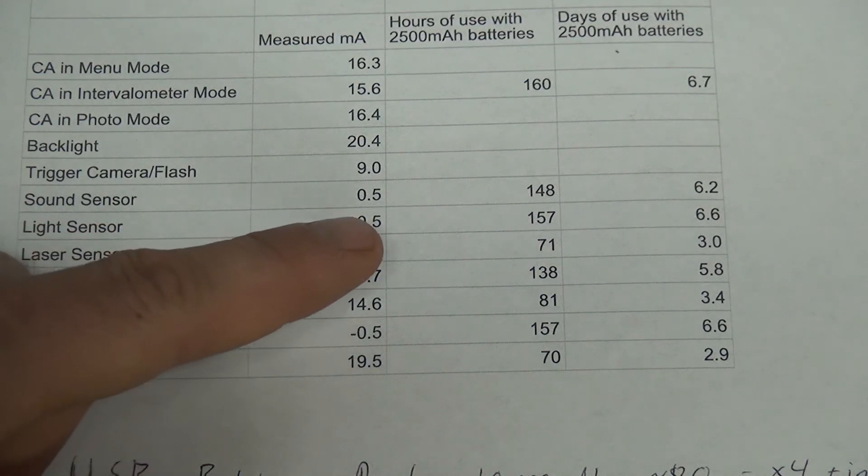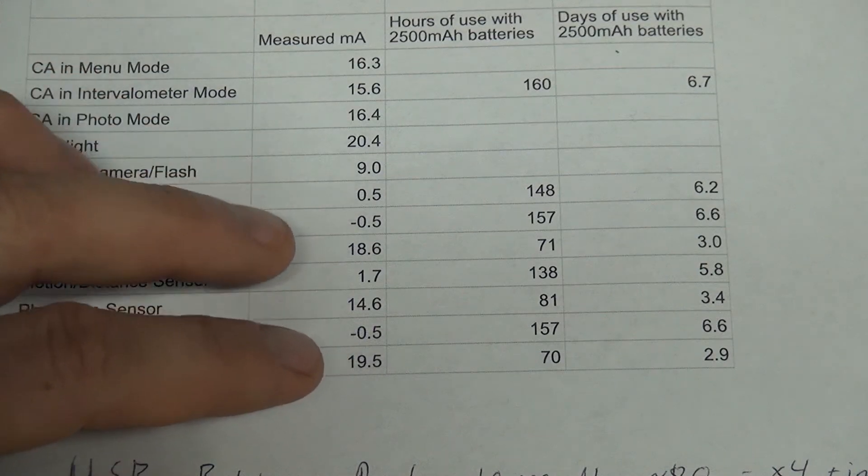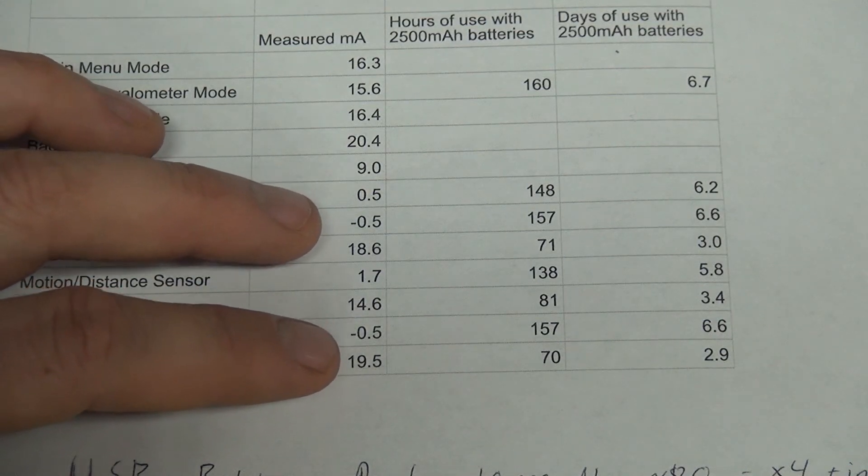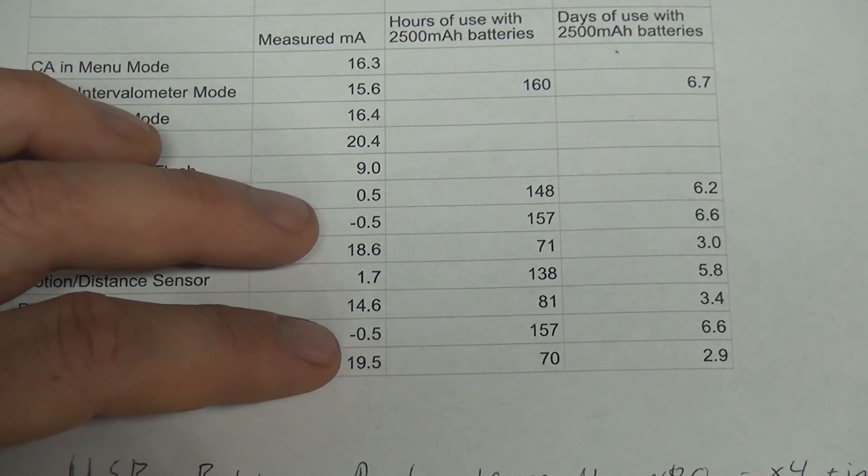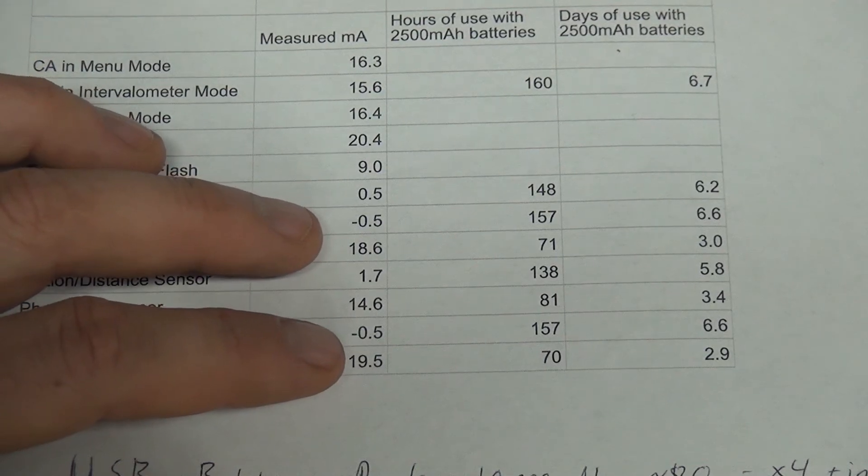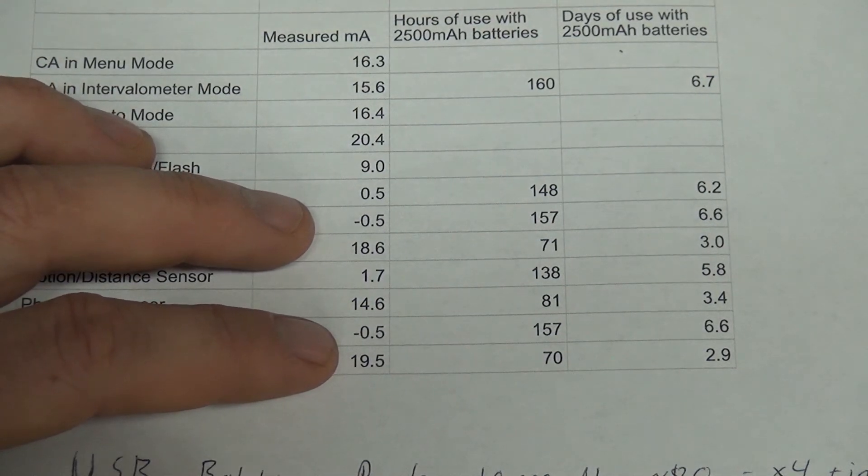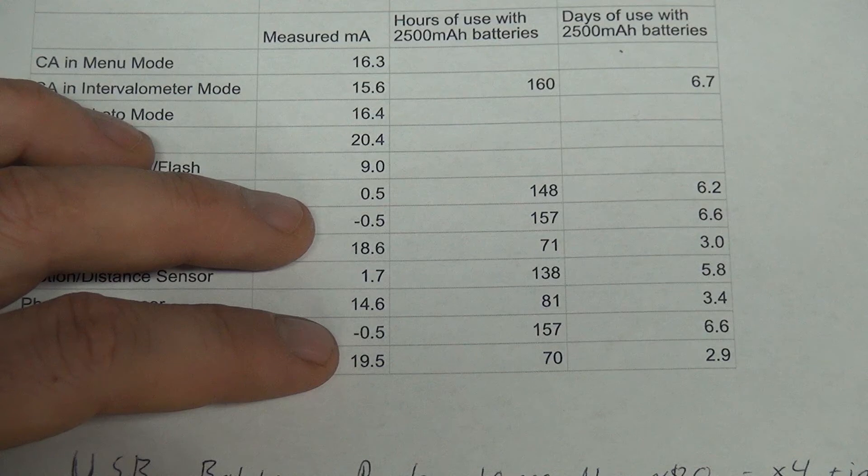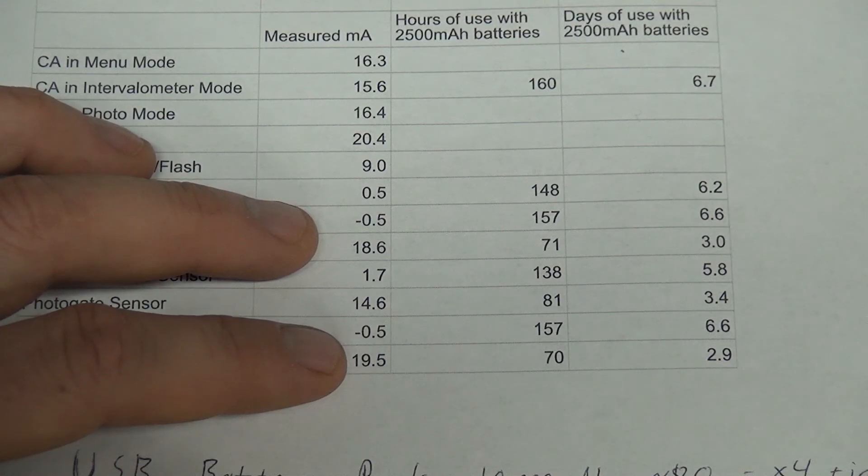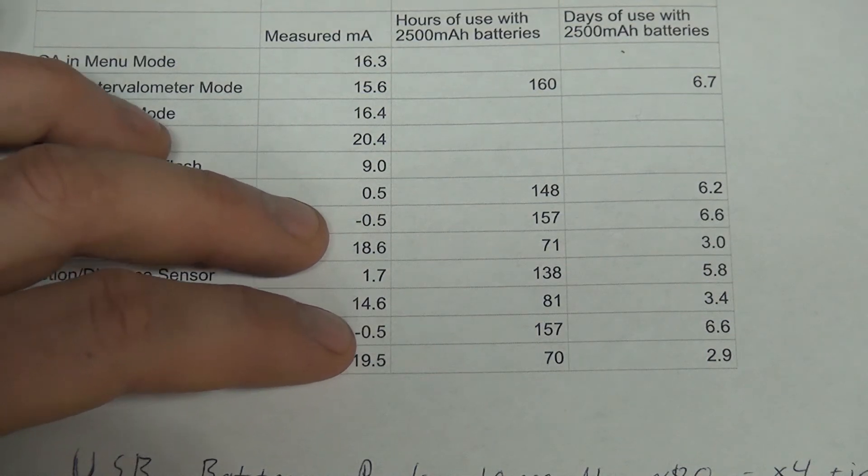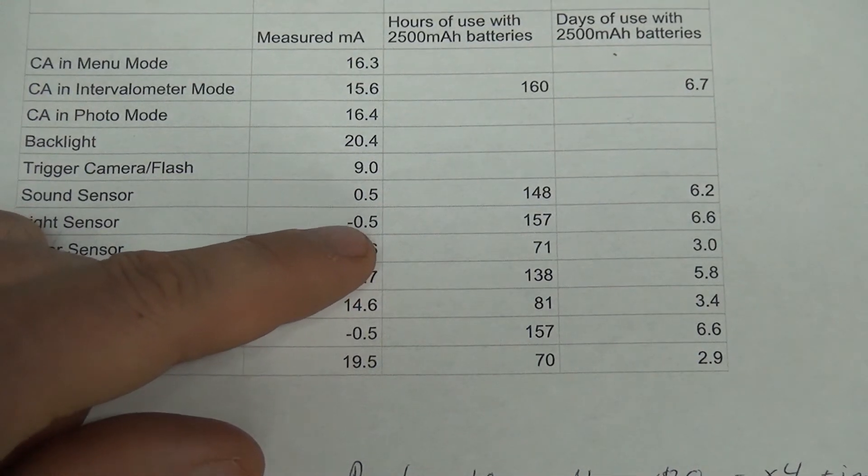You can see that the sound is a very low power usage. The light sensor and the valve sensor, these are very consistent measurements, and I don't fully understand them. These are effectively saving power when you plug these sensors into the Camera Axe. It definitely shows up very consistently that you're saving half a milliamp. I'm not exactly sure why. Maybe I'll do a future video about that.